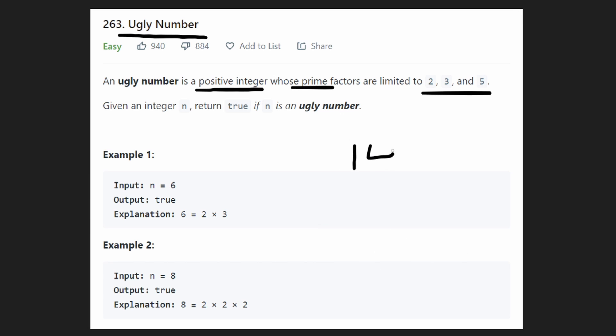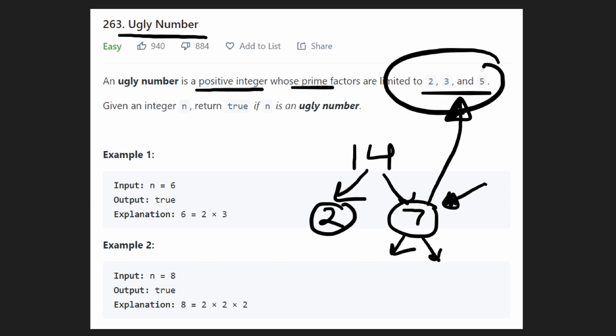Let's take a counterexample, 14. If we try breaking this down, we can get 2 and 7, right? 2 cannot be further broken down. It's a prime number. Can 7 be broken down further? It is also a prime number. But this is a prime number that's not within the 3 that we are allowed, right?